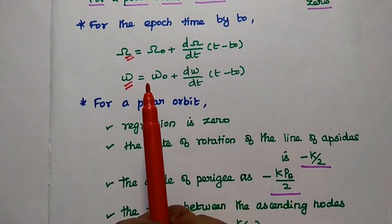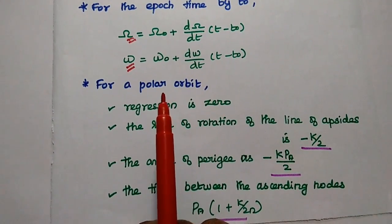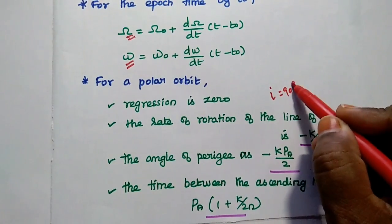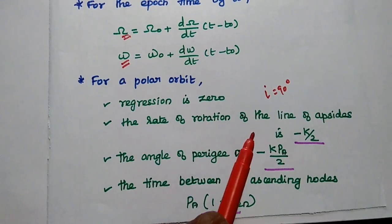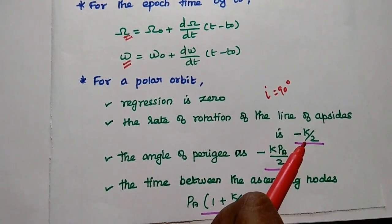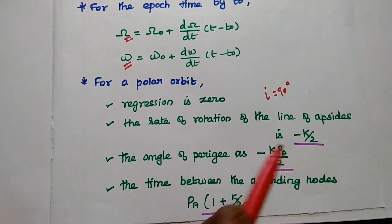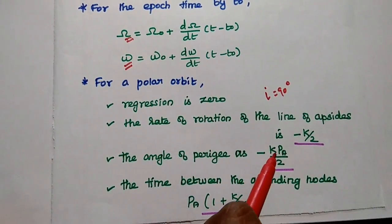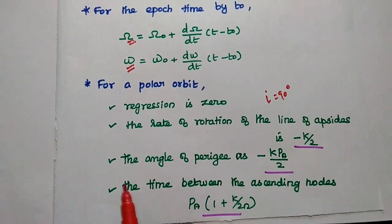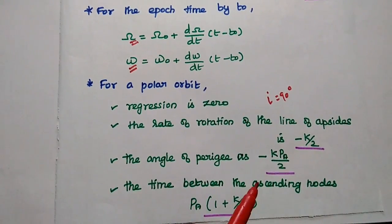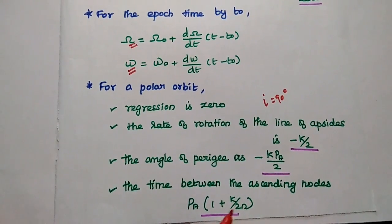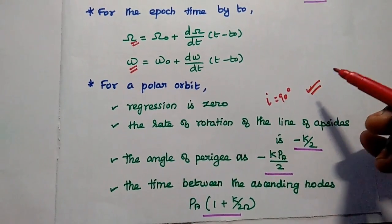For the polar orbit, the regression value is zero because the inclination angle is 90 degrees. The rate of rotation of the line of apsides value is minus k divided by 2, that is half of the factor due to oblateness. The angle of perigee is minus k by 2. Here Pa is the anomalistic period. The time between the ascending nodes is given as Pa times (1 plus k divided by 2n). These are the values for polar orbit.